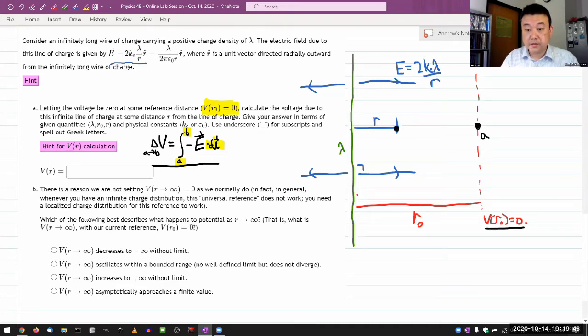And this point, which is at the distance R, is going to be my B. And when I'm done with the calculation, that will basically give me the voltage at the distance R. So that's my setup.